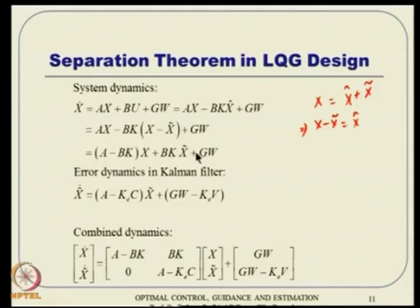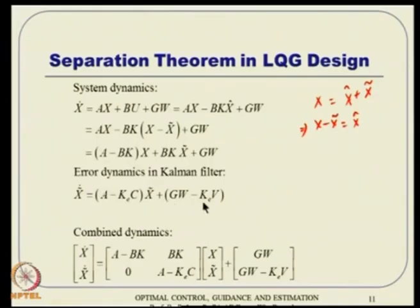To analyze stability, we take expected values. Since w and v are zero-mean white noise, their expected values are zero, and the noise terms drop out. The system matrix for the combined dynamics becomes block triangular. Eigenvalue analysis via the characteristic equation shows the determinant of the combined system matrix factors into the product of two determinants.